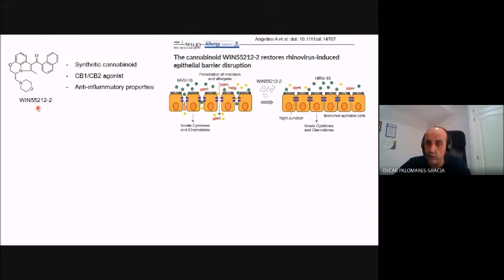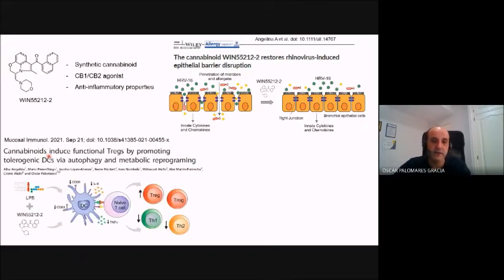We previously saw that WN restores rhinovirus-induced epithelial barrier dysfunction, and more recently, we have demonstrated that cannabinoids in general, but WN in particular, is able to promote tolerogenic dendritic cells able to generate FOXP3-positive regulatory T-cells in peripheral dendritic cells by mechanisms involving autophagy and metabolic reprogramming.